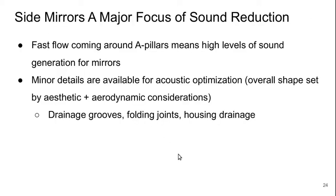Side mirrors are a major focus of sound radiation in vehicles. The relatively quick flow coming around the A-pillars means high sound level generation for the mirrors, especially for dipole sources. The overall shape is set by aesthetics and major aerodynamic considerations, but minor details are available for acoustic optimization — including drainage grooves, folding joints, and the housing drainage for the mirror, all of which can be modified to improve acoustic performance.